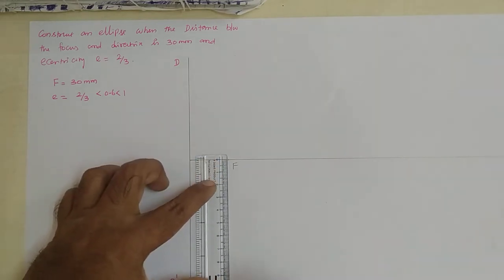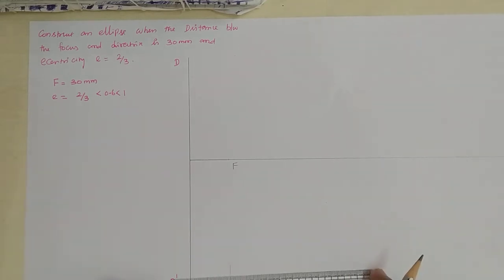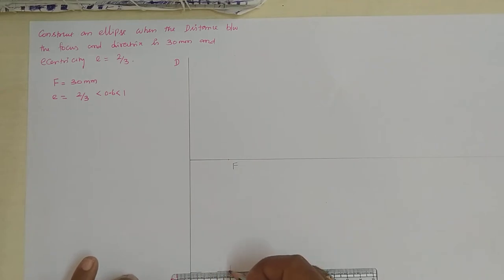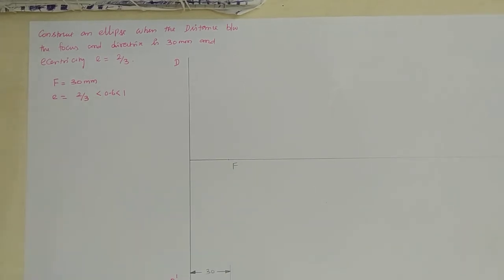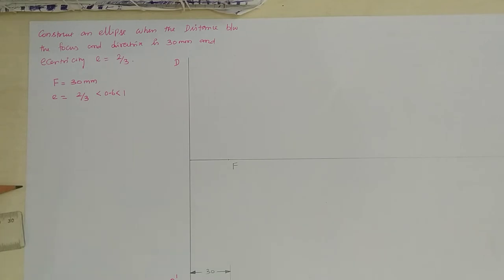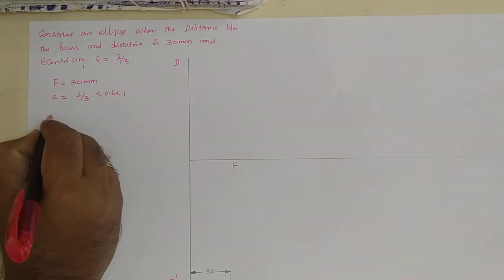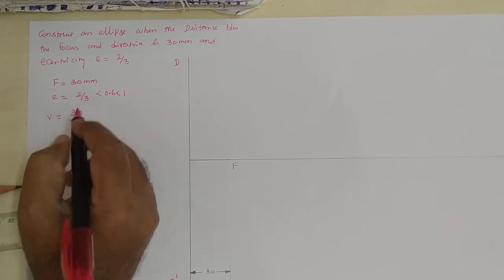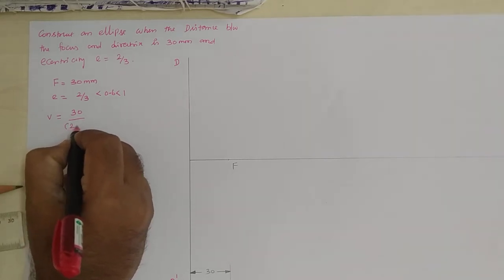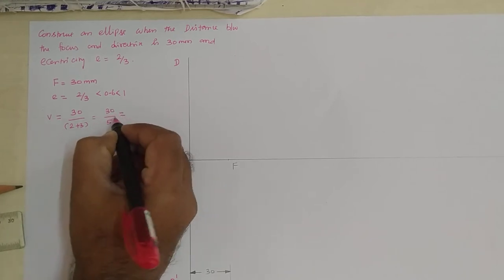I am marking this dimension without disturbing the drawing — marking it as 30 mm as given in the problem. The arrow mark drawn is a box type arrow mark. Now we are going to find the vertex point V, which equals the focus value of 30 divided by the sum of the eccentricity divisions: 2 plus 3 equals 5, so 30 divided by 5 equals 6 mm.